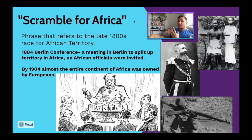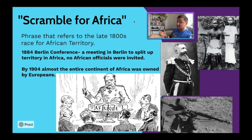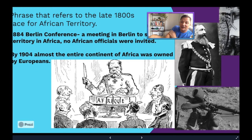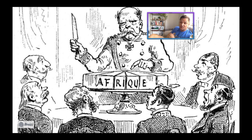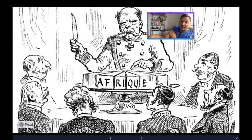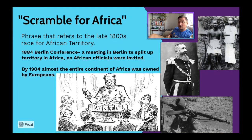By 1884, to prevent war over land they didn't even own — which is ridiculous — the Berlin Conference was held, a meeting in Berlin, capital of the German Empire, to split up African territory. Not a single African person was invited. The conference was led by Otto von Bismarck, seen in a famous image splitting up a cake labeled Africa with other Europeans around the table. By 1904, the entire continent of Africa was owned completely by Europeans.